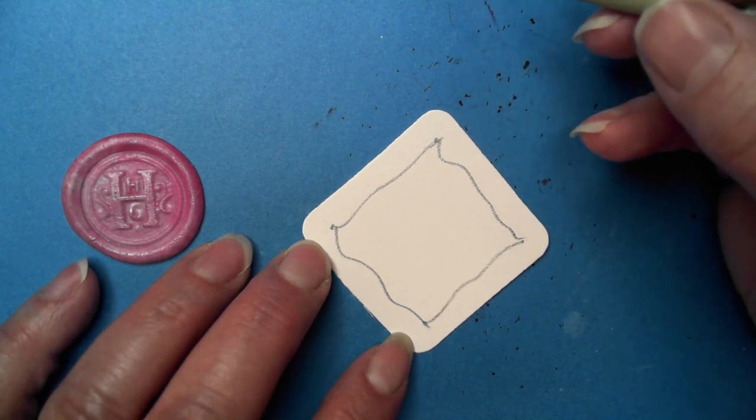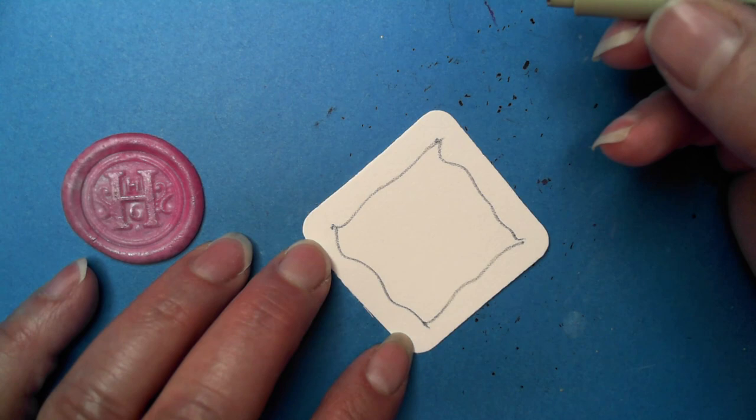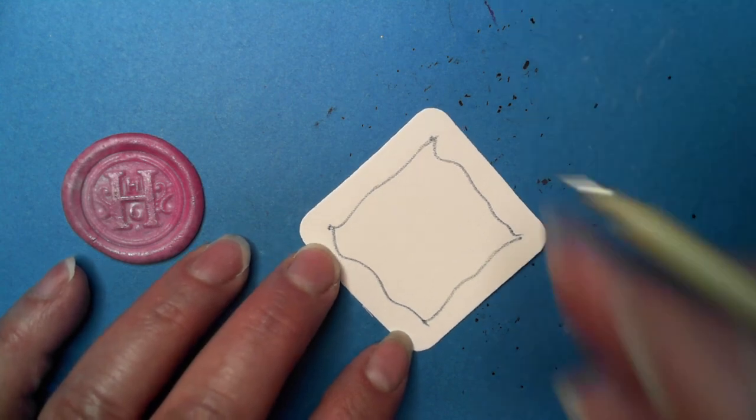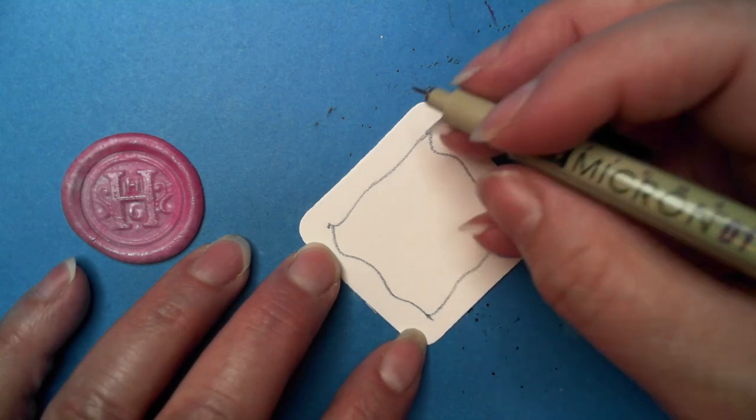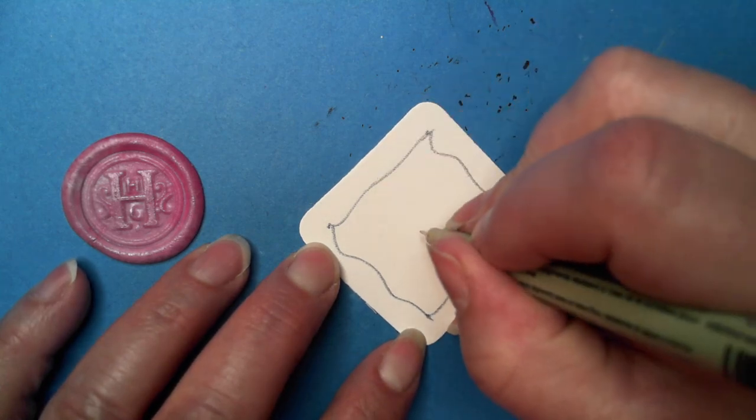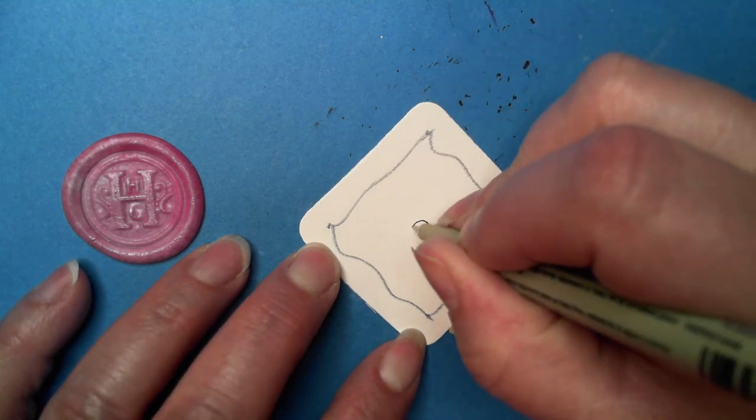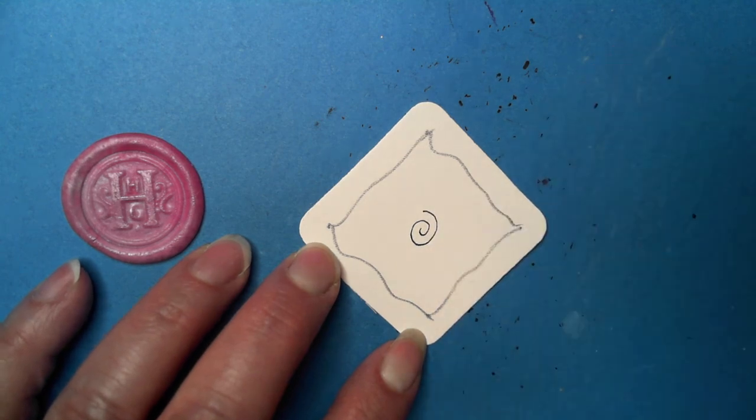This one is so cute and it starts off with a tangleation on the Zentangle original tangle Printemps. Printemps is basically a spiral or it could look like a squashed spring. Printemps is French for spring.